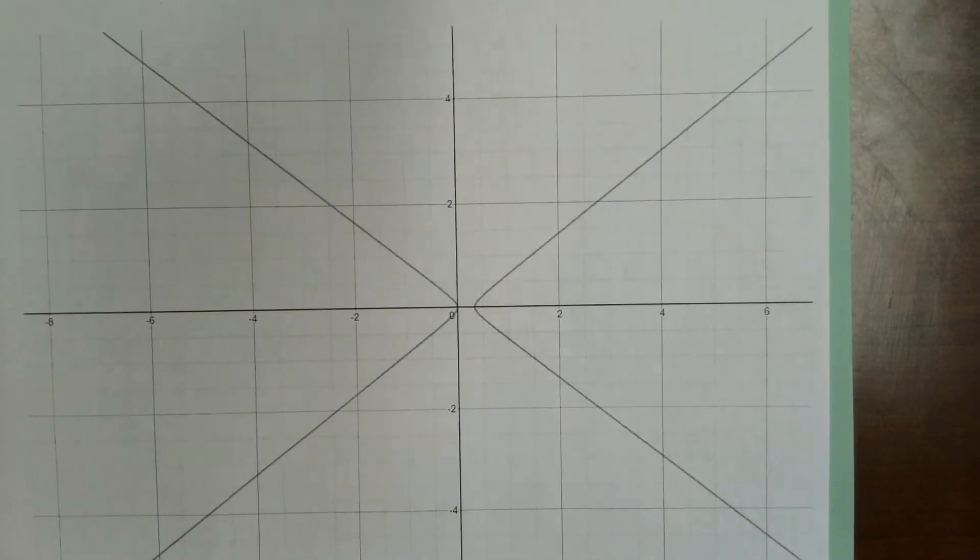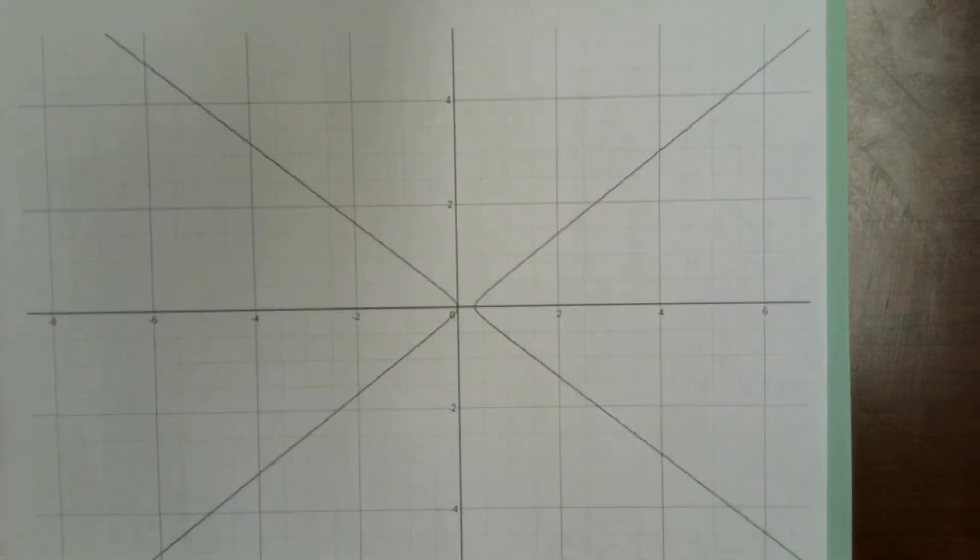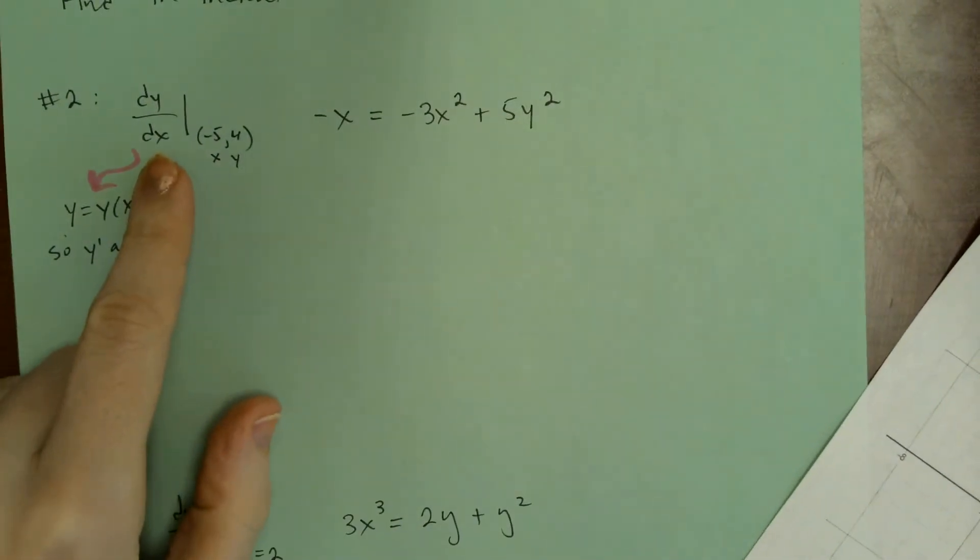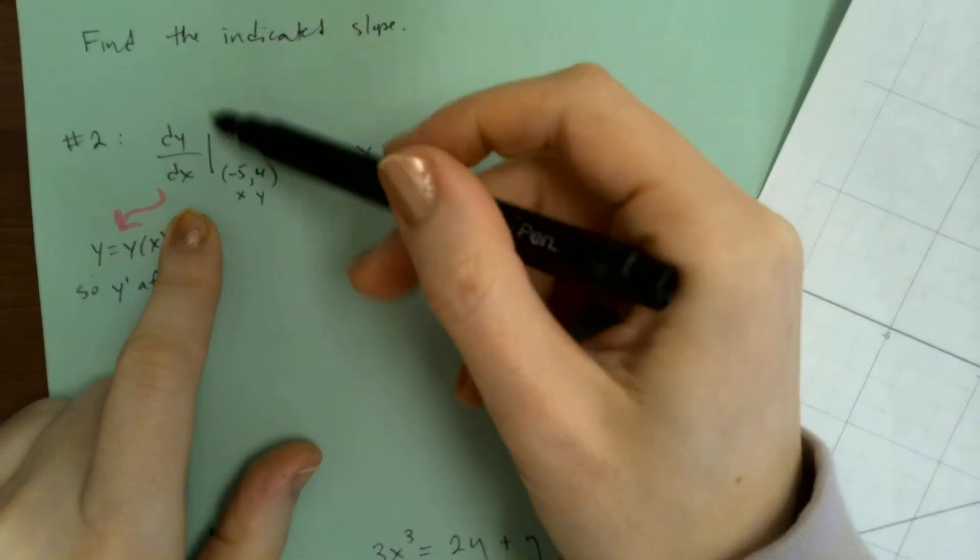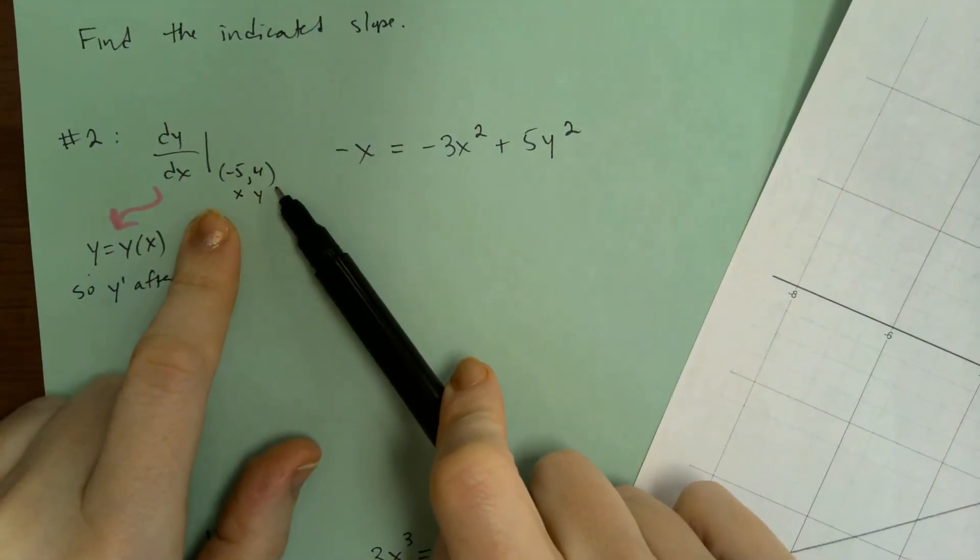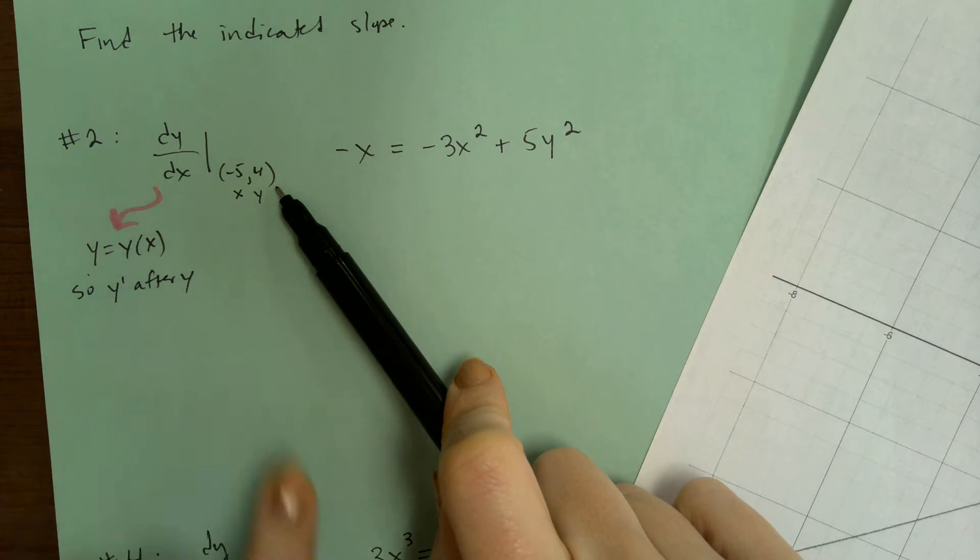You could see that it's not a function because there's inputs that have more than one output, an output above and below the input. And what they're asking us to do right here, they want us to find dy/dx evaluated at, that's what this line means, evaluated at the point negative five, four.